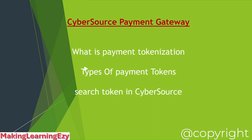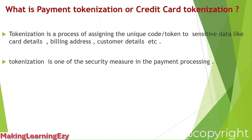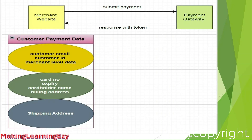Welcome to this session. We are going to discuss what is payment tokenization, how it works, different types of payment tokens, and how to search a payment token in the CyberSource payment gateway. Payment tokenization, also known as credit card tokenization, is a process of assigning a unique code or token to sensitive data. The sensitive data can be customer details, billing address, or card details. Tokenization is one of the security measures in payment processing. I have drawn a diagram for better understanding.